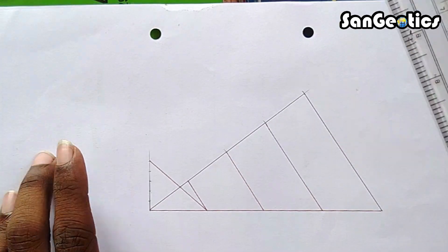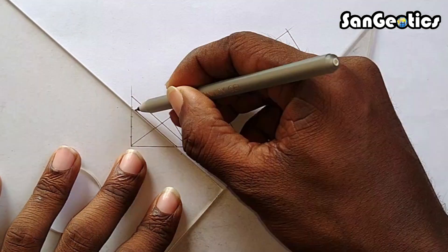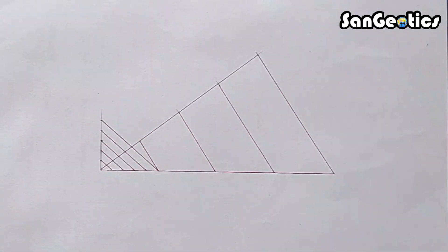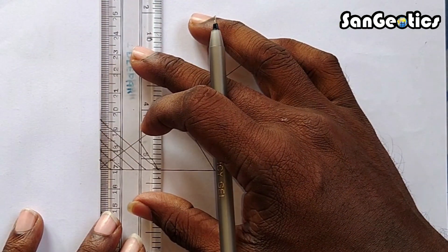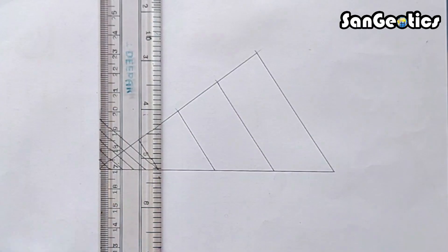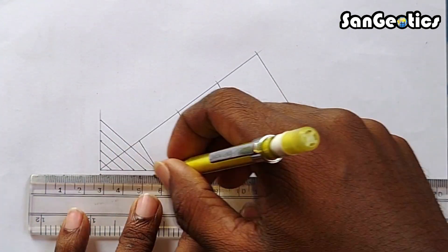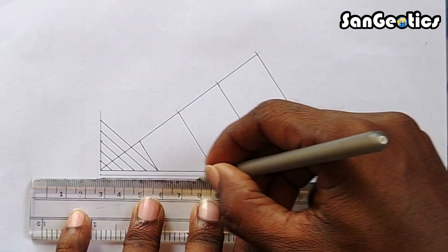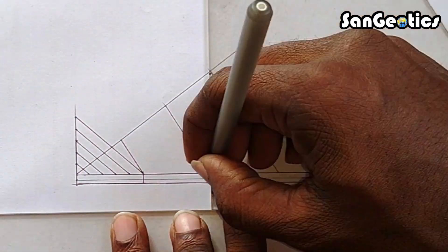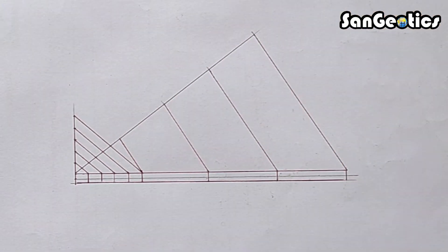Join these lines and draw another four parallel lines using a set square. Step 5: mark two points at a 0.2-interval, draw two horizontal lines, and from every primary and secondary division draw a vertical line, then mark the scale values.